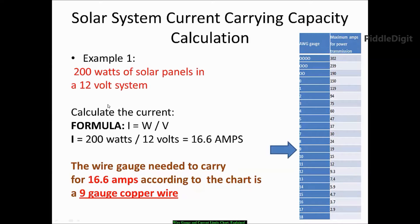So once more, here is the calculation and the formula is current equals watts divided by volts. So we have 200 watts of solar panels and we are considering a 12 volt system. So you divide 200 by 12 which equals 16.6 amps.